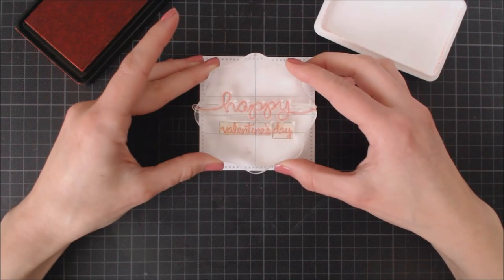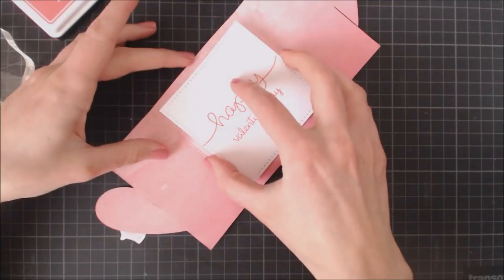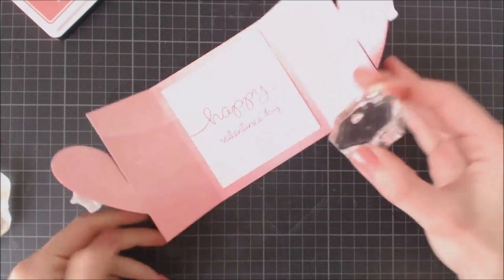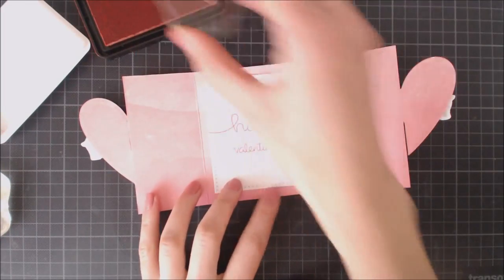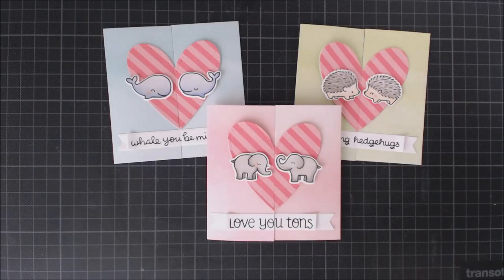I decided to add some mini hearts from the Hedgehugs stamp set at the last minute after I'd already adhered the panel to my card using liquid glue. I think they look super cute and add something more to the inside. And that will finish off that card.